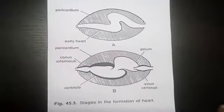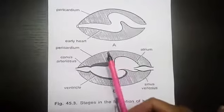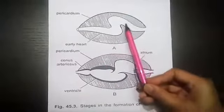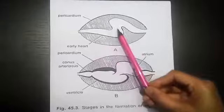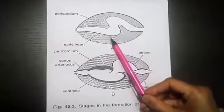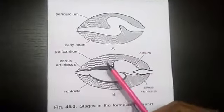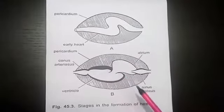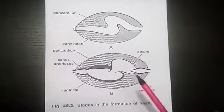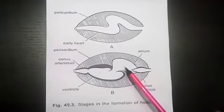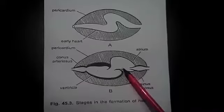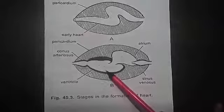Thus, heart originally is a straight tube but it becomes S-shaped due to increase in length as its ends are fixed. We all know that basically heart has two types of chambers, a collecting chamber that is auricle or atrium and a pumping chamber that is ventricle.